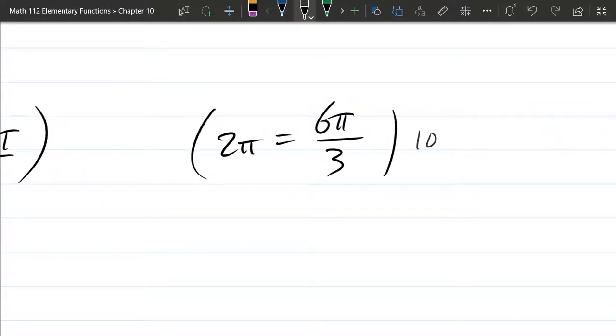Let's just guess 10. So I'm going to multiply this equation by 10. So 20π equals 60π over 3.